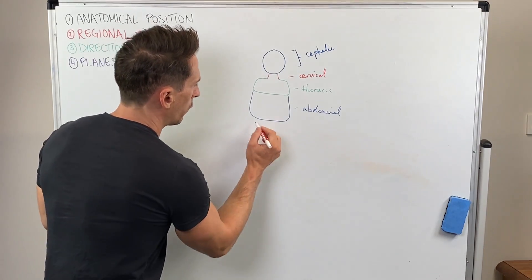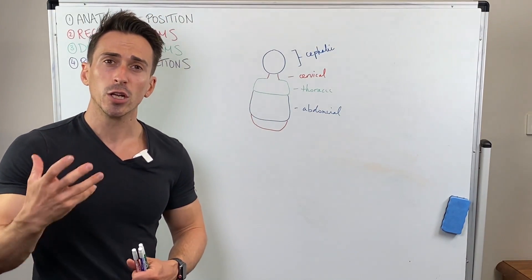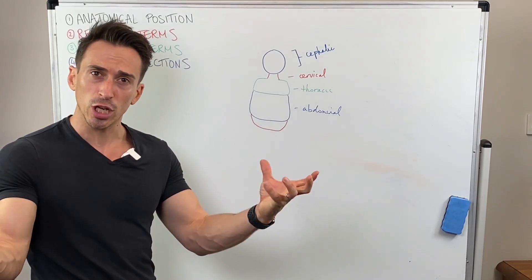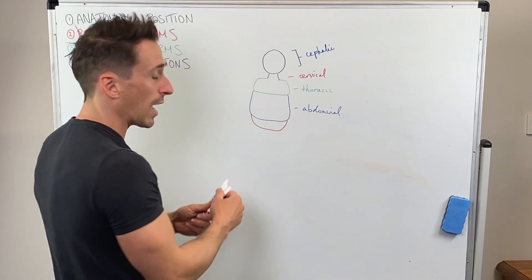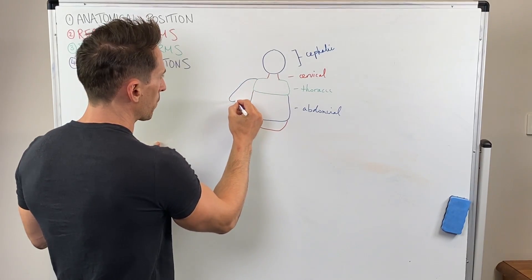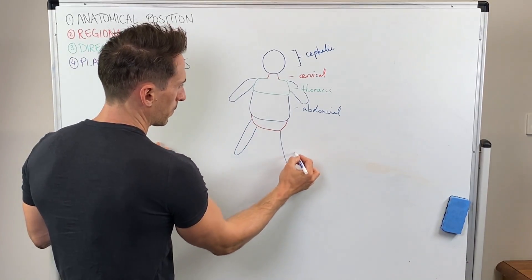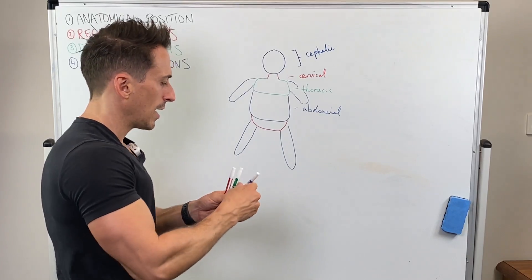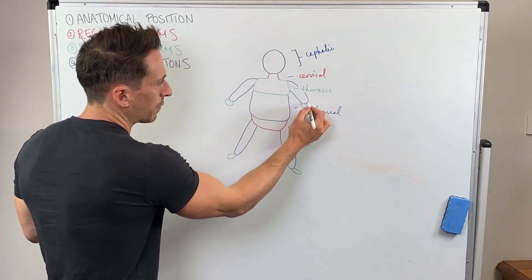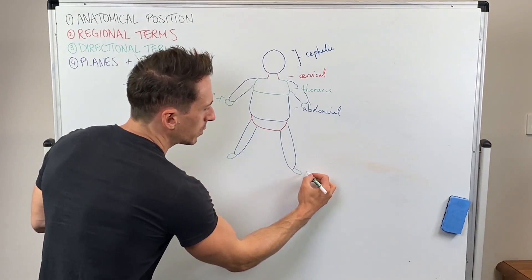Then we're going to have pelvic. Pelvic is going to include the genitourinary tract — so this has to do with the reproductive system and also the urinary system. Then we also have the limbs. We've got upper extremities and lower extremities. When we look at hands and feet, the word we use for hands is manis, and for foot it's pes.